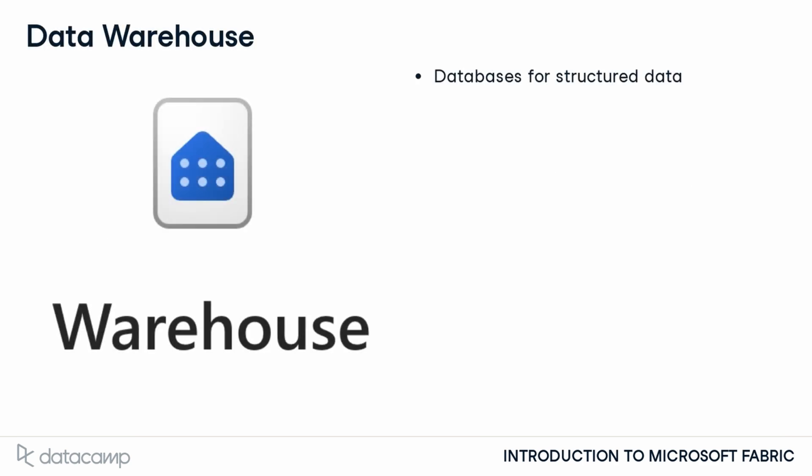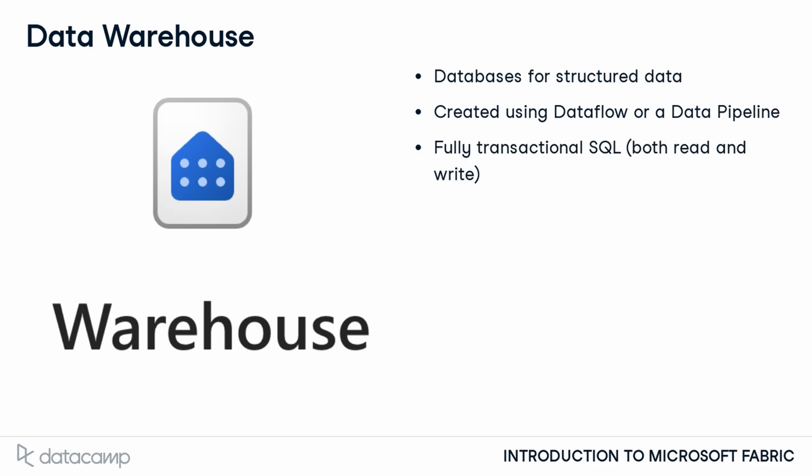Next, we have the Data Warehouse experience, which contains the Synapse Data Warehouse. A data warehouse is one of Fabric's main storage options, the other being a lake house. Warehouses store data in structured databases that are queryable by SQL. You can use tools like Data Pipeline or Data Flow Gen 2 to load data into a warehouse. Warehouses support fully transactional operations with SQL, meaning you can execute both read and write queries. Data in a warehouse is stored as a Parquet file within OneLake, allowing all Fabric tools to interact with the same data — whether data engineers using Python or analysts using SQL.